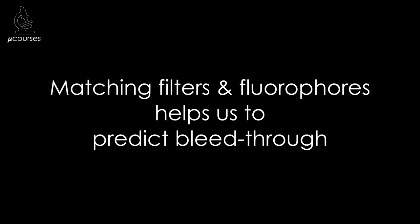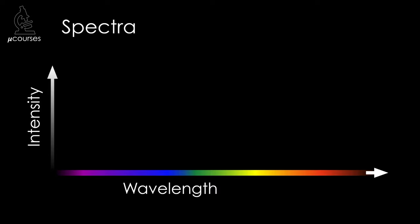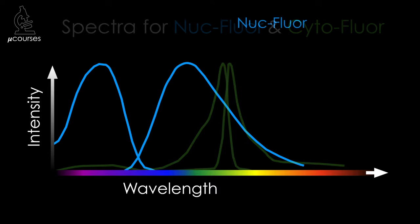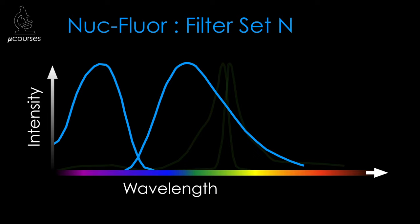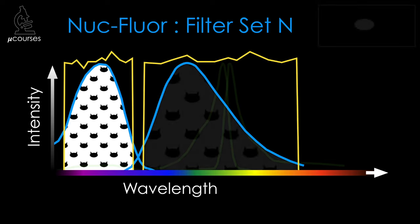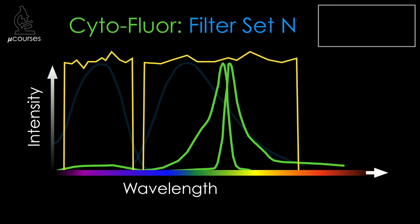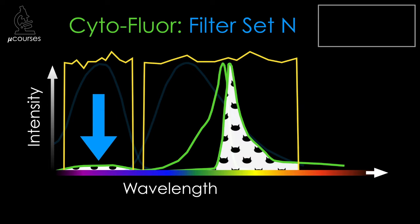Matching filters and fluorophores helps us predict whether bleed-through might occur. Let's take a look at the spectra for our example, labeled with nukeflor and cytoflor, focusing on the excitation and emission of nukeflor compared to filter set N. Filter set N contains an excitation filter nicely matched for nukeflor and an emission filter that collects nearly all of the emission light. We can also see that cytoflor is excited by the wavelengths transmitted by the excitation filter in filter set N, and the emission filter in filter set N transmits cytoflor emission — so bleed-through is very likely.